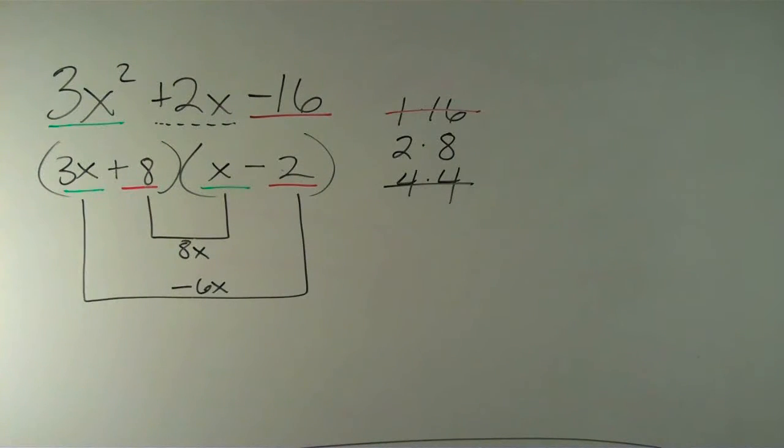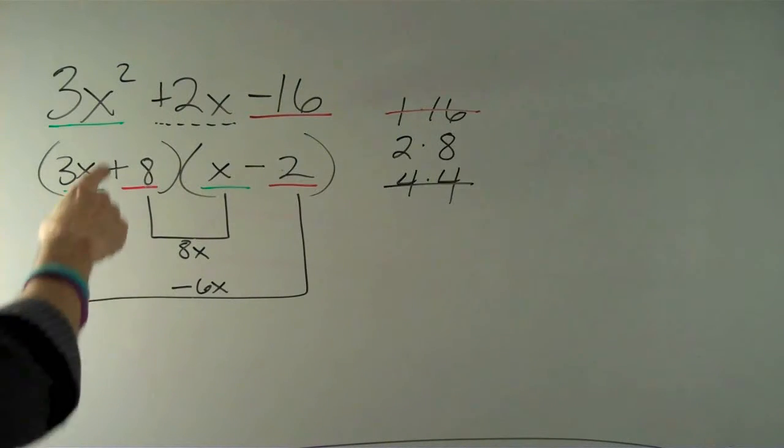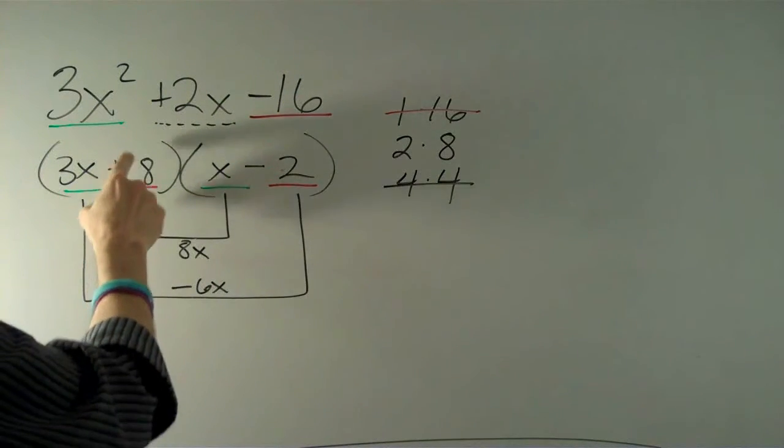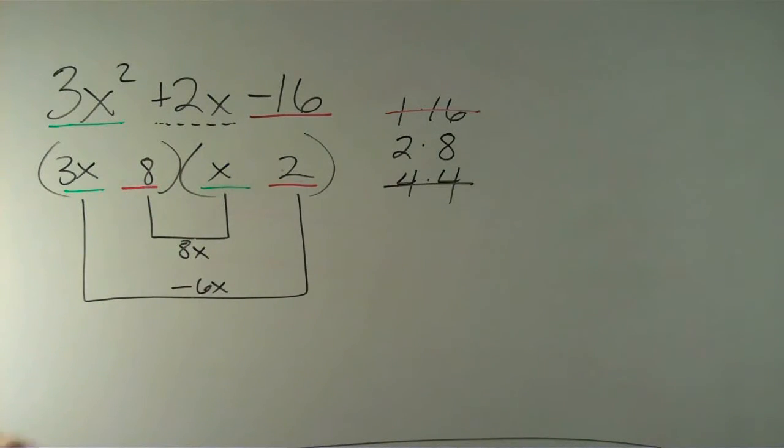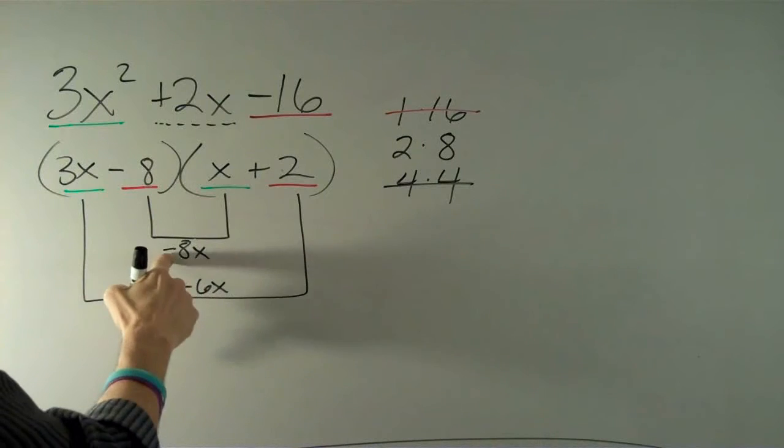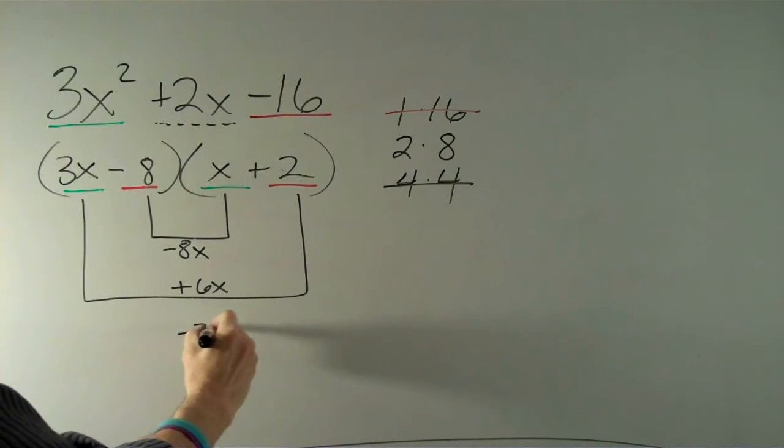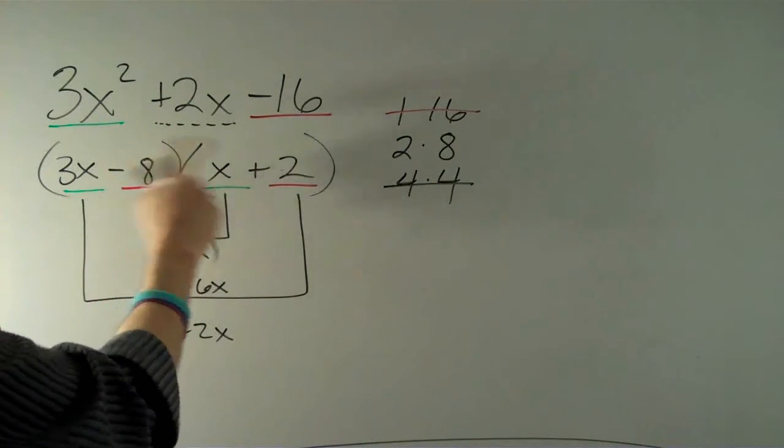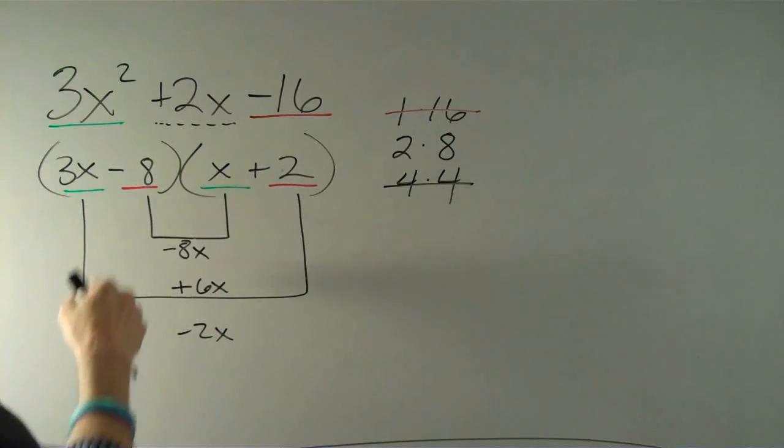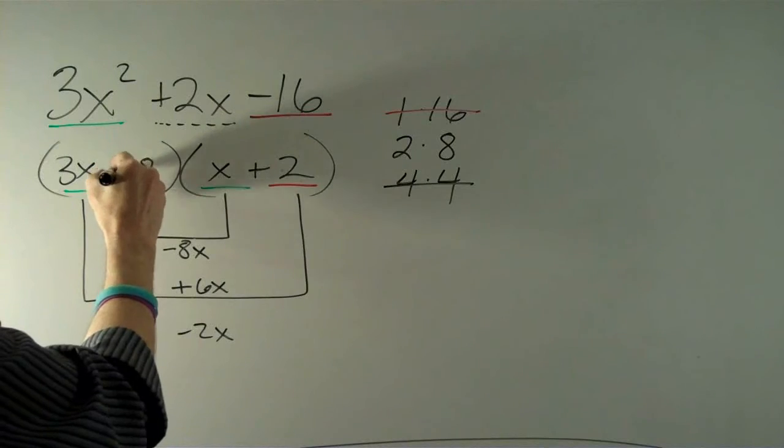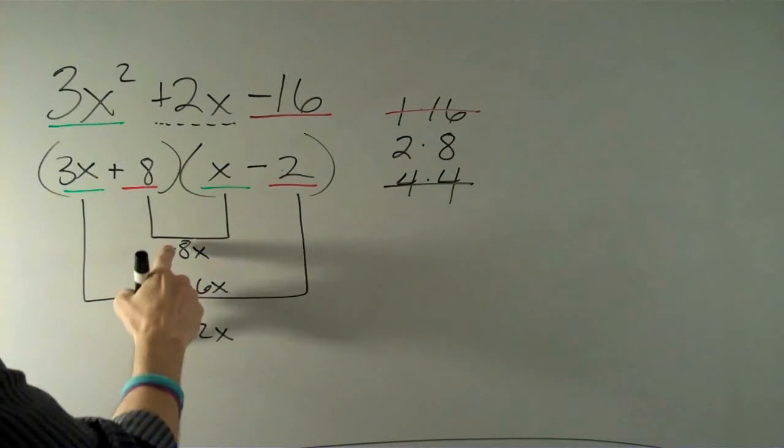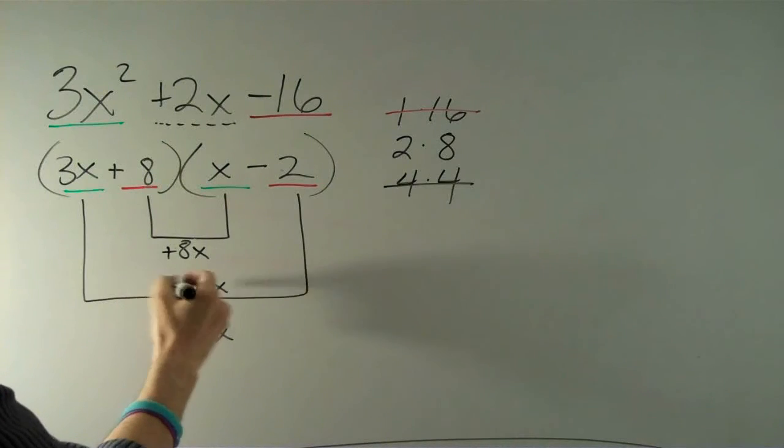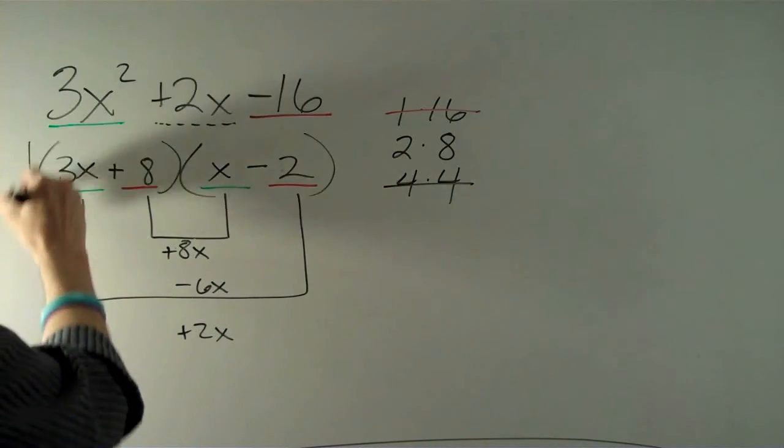Now what if I had put my plus and my minus in the wrong place? What if I had positive 2 and negative 8 here? Then I would have seen negative 8x and positive 6x, which would have gotten me negative 2x. In other words, it would have gotten me the right number but the wrong sign. Whenever you see the right number but the wrong sign, you just change the pluses and minuses within your binomials. And there's our answer.